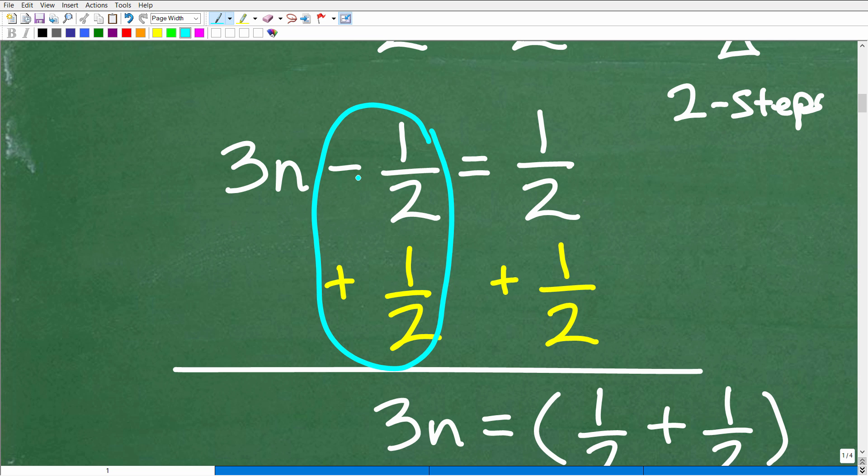So I want to kind of disappear this one-half on the left-hand side. So I'm like, okay, I got a negative one-half. How can I get rid of it over here? We'll just add a positive one-half to it.